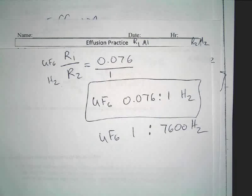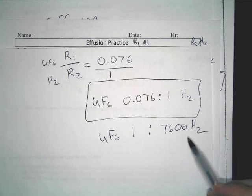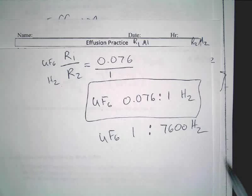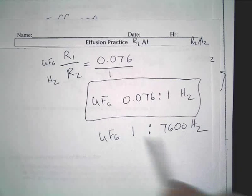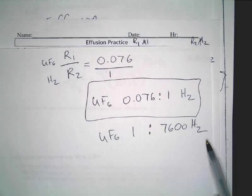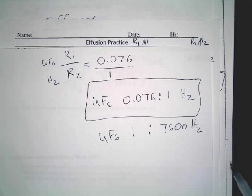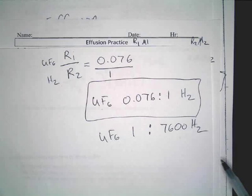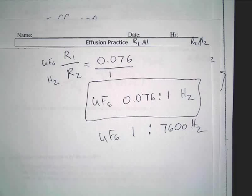How does that make sense that it was faster? Because this is the rate of diffusion — the higher the number, the faster it goes. This has nothing to do with mass now; it has to do with the ratio. For the homework and test, as long as you keep it straight throughout the whole problem, it doesn't matter which one goes first. Does that make sense with how to do these effusion problems? As long as you keep the numbers straight, it's easy.